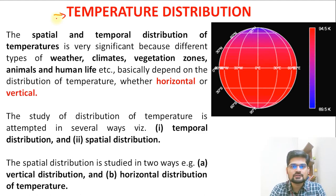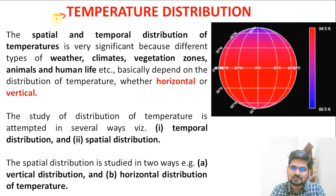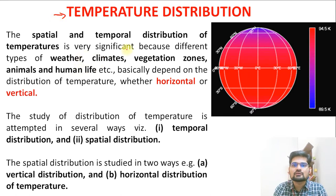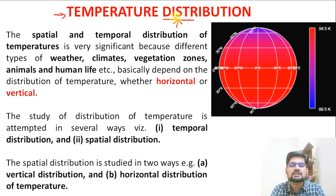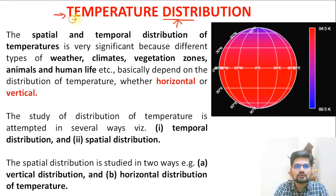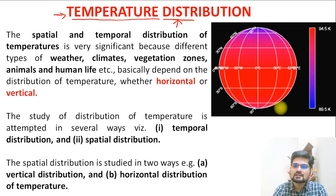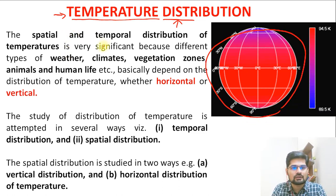In earlier lectures we have already understood about insolation, latitudinal heat balance, and heat budget on the surface. But importance is also given to distribution because in geography we are concerned about the spatial and temporal distribution of phenomena. Similarly, we are talking here about temperatures — how is temperature distributed all across the earth, and why is it important?